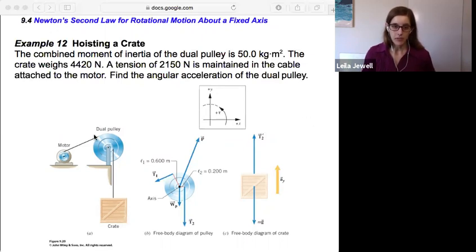Let's take a look at all the different forces that we have here. On the pulley, it feels a tension from the motor that pulls it, that's T1. It also feels a tension from the crate it's supporting. That's T2.